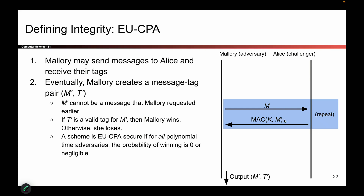We're done with the query phase — done with tricking Alice into sending us MACs. Mallory's ready for the challenge, and the challenge is just this: give me a message and a tag that match. If Mallory can find a message M' and a tag such that the MAC of M' with the secret key matches the tag she chose, she wins. This is her forging a tag that she was not supposed to be able to forge because she doesn't know the key.